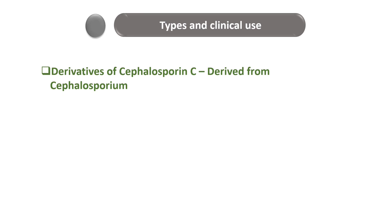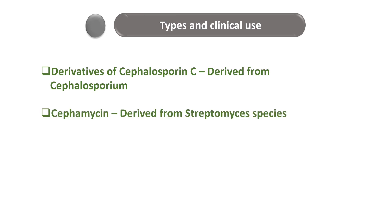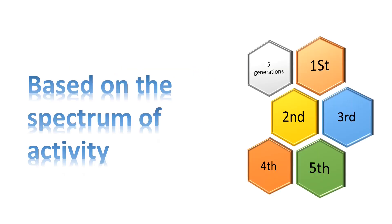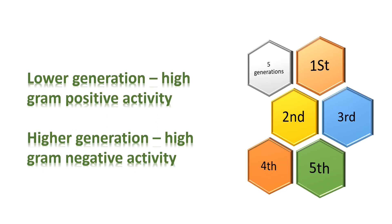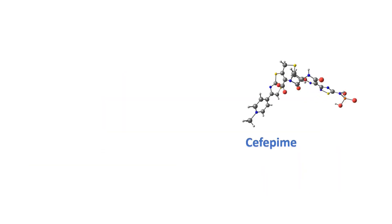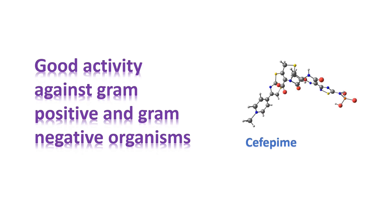Most available cephalosporins are semi-synthetic derivatives of cephalosporin C, a compound with antibacterial activity produced from the fungus Cephalosporium. The closely related cephamycin compounds, regarded as members of the cephalosporin class, are derived from Streptomyces species. In clinical practice, cephalosporins are grouped into five generations based on their spectrum of activity. Generally, lower generations have more gram-positive activity and higher generations have more gram-negative activity. The fourth-generation drug cefepime is an exception, with gram-positive activity equivalent to the first generation and gram-negative activity equivalent to the third generation.